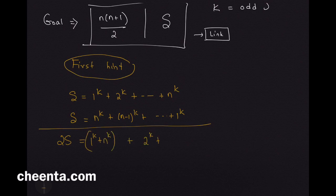2 to the power k plus n minus 1 to the power k. Like this. We will go to the last one n to the power k plus 1 to the power k.